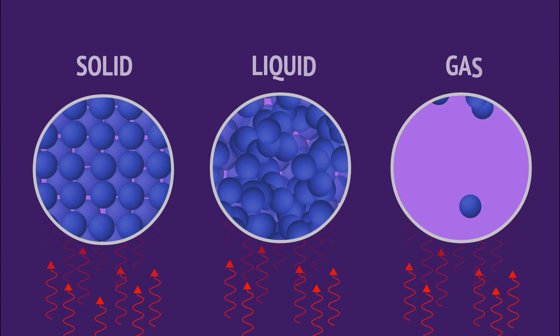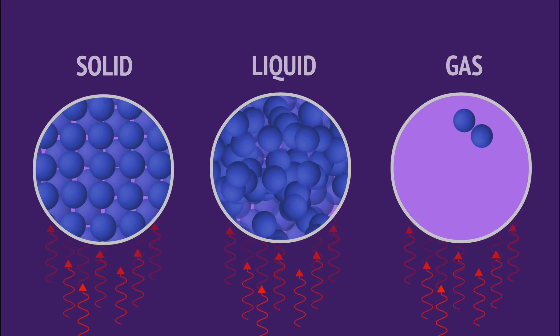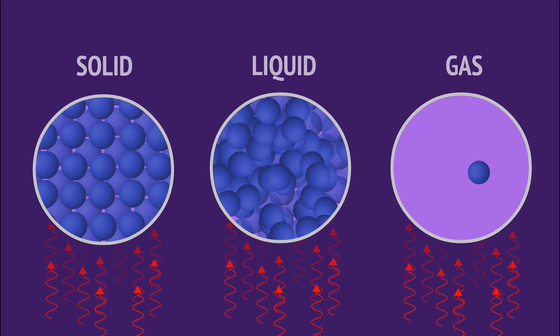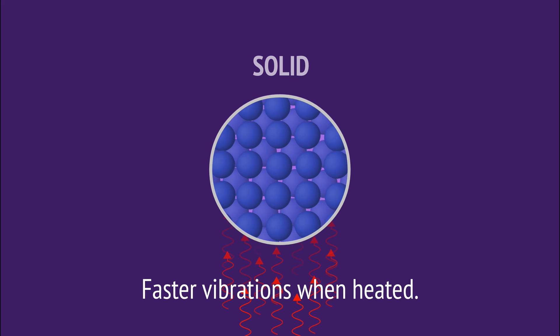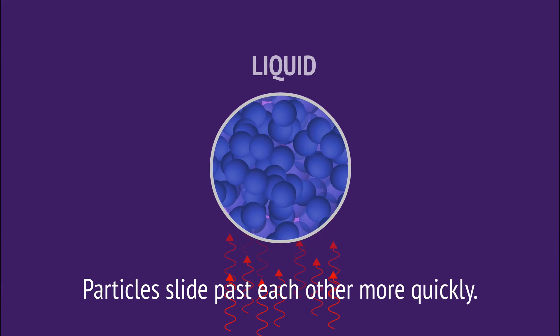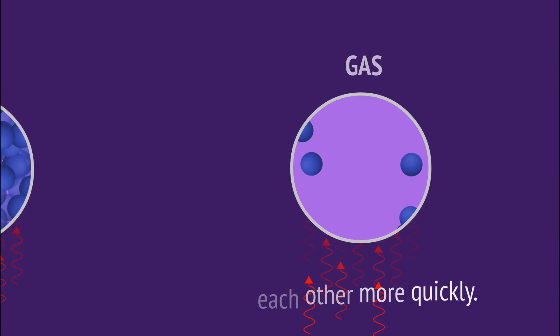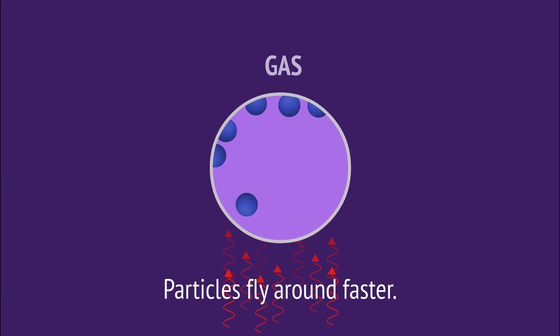Adding heat results in a faster movement of particles and so more kinetic energy. Heating a solid results in faster vibrations of particles. Heating a liquid causes the particles to slide past each other more quickly. And heating a gas causes the particles to fly around more quickly.